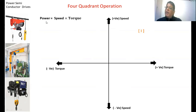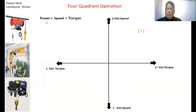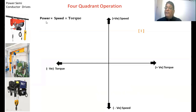If the power is negative, the motor acts as a generator, giving power back to the supply, which causes the motor speed to decrease — this is known as regenerative braking.